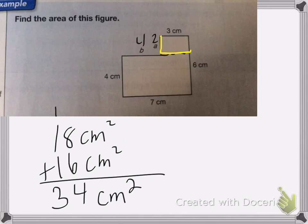So in this case, I'm going to do the small one first here. So my length is 3 and my width is 2. So I'm going to do 3 times 2, which is 6.